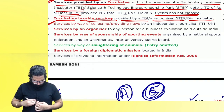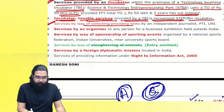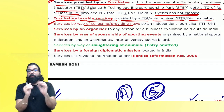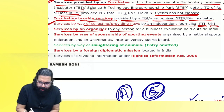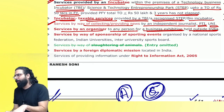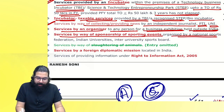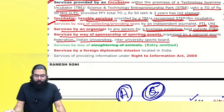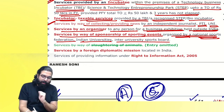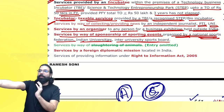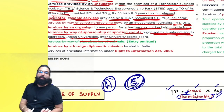Services by way of collection of news — an independent journalist collecting and selling news, or Press Trust of India or United News of India — their services are also exempted. Services by an organizer to any person for a business exhibition held outside India — my services will always be exempted. Services by way of sponsorship of a sporting event organized by national sports federation, Indian universities, or inter-university sports board — those sponsorship services are always exempt.